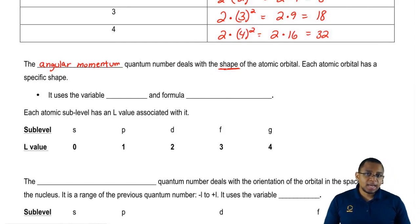Remember all those shapes that I had you memorize for S, P, D, and F. Those shapes are determined by this quantum number, the angular momentum quantum number.